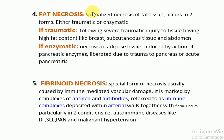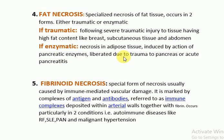The fourth type is fat necrosis, a specialized type. It occurs in two forms: traumatic or enzymatic. Traumatic fat necrosis occurs after severe traumatic injury to tissue with high fat content, such as the breast, subcutaneous tissue, and the abdomen. In enzymatic fat necrosis, adipose tissue is affected by the action of pancreatic enzymes liberated due to trauma to the pancreas or in cases of acute pancreatitis.